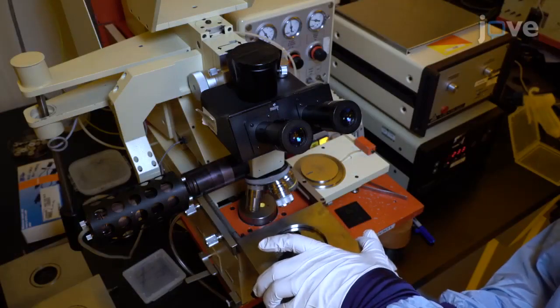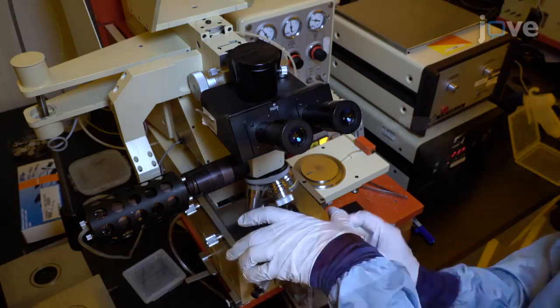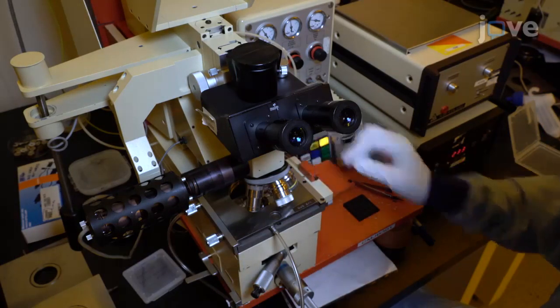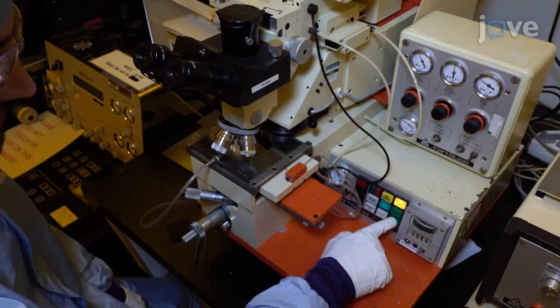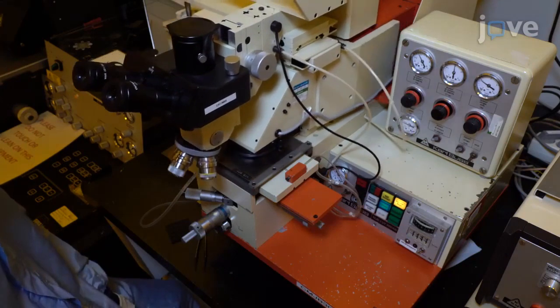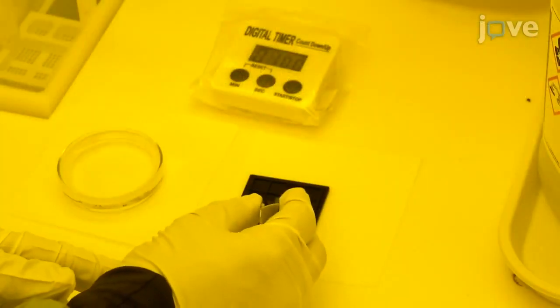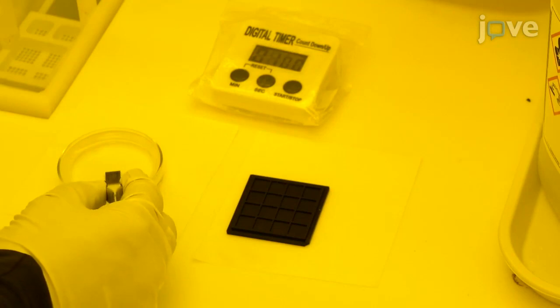Following this, place a photomask in a mask aligner and place the device under the appropriate pattern. Expose the device to UV light through the photomask of MESA and quantum integrated circuit layouts. Then develop the resist in MF319 developer for a few minutes.